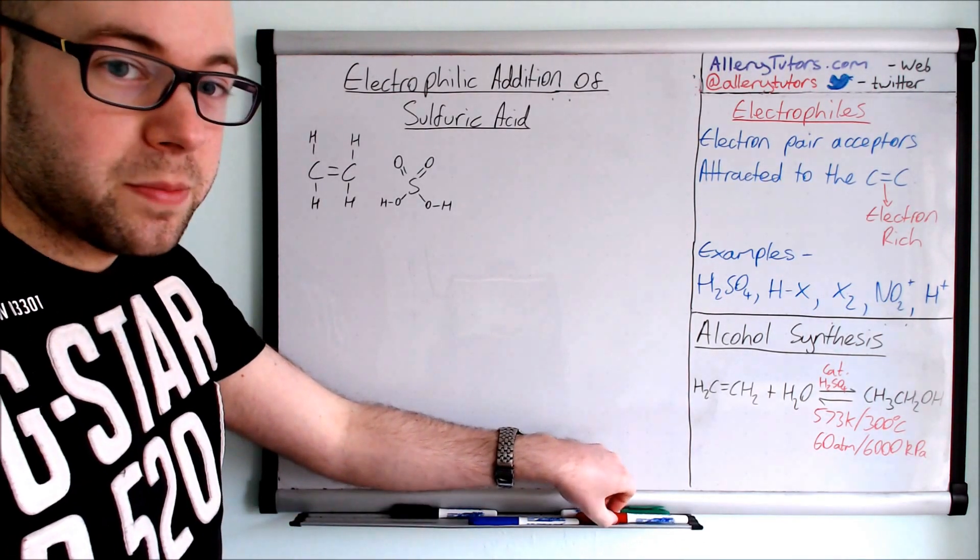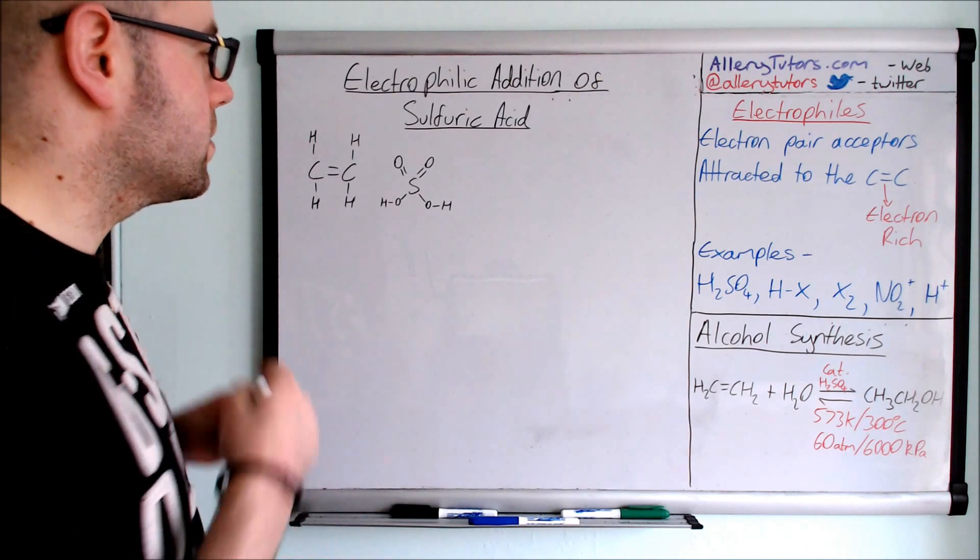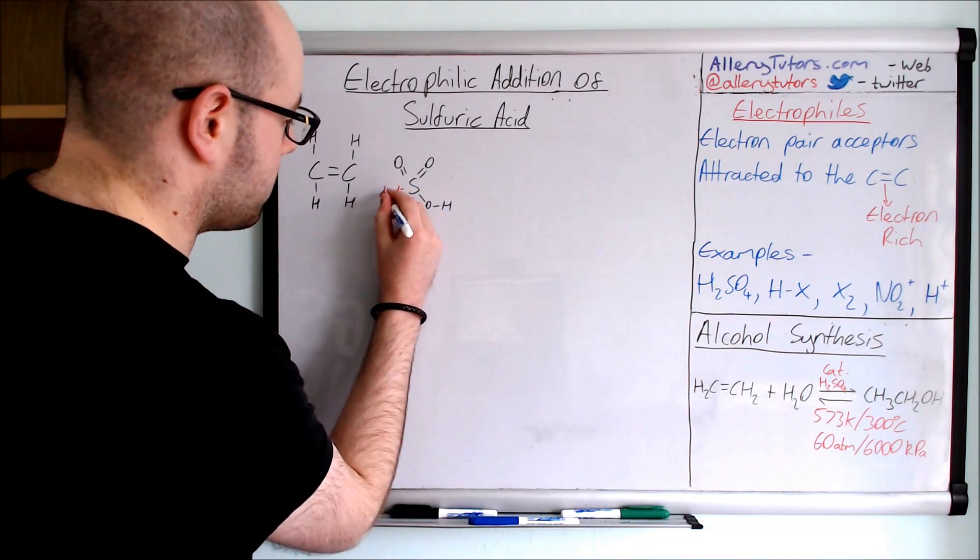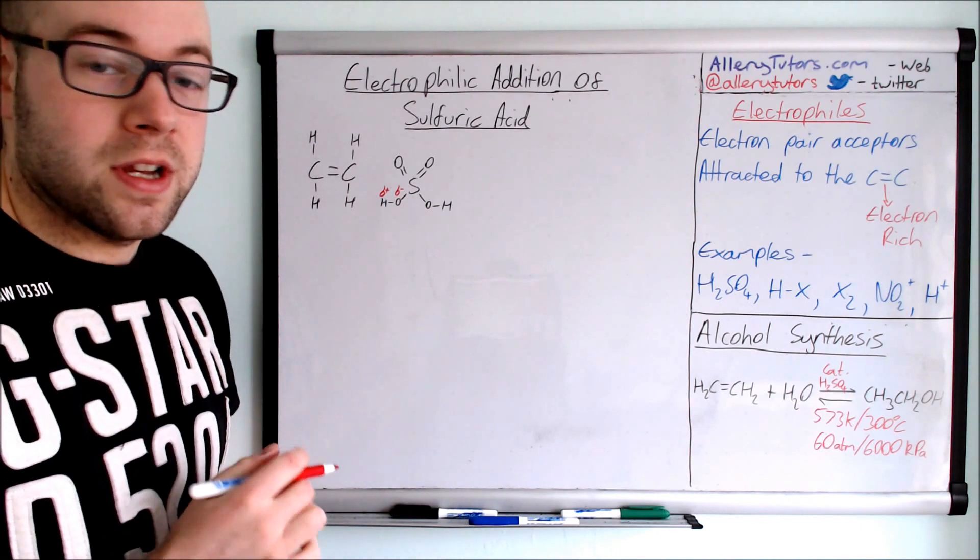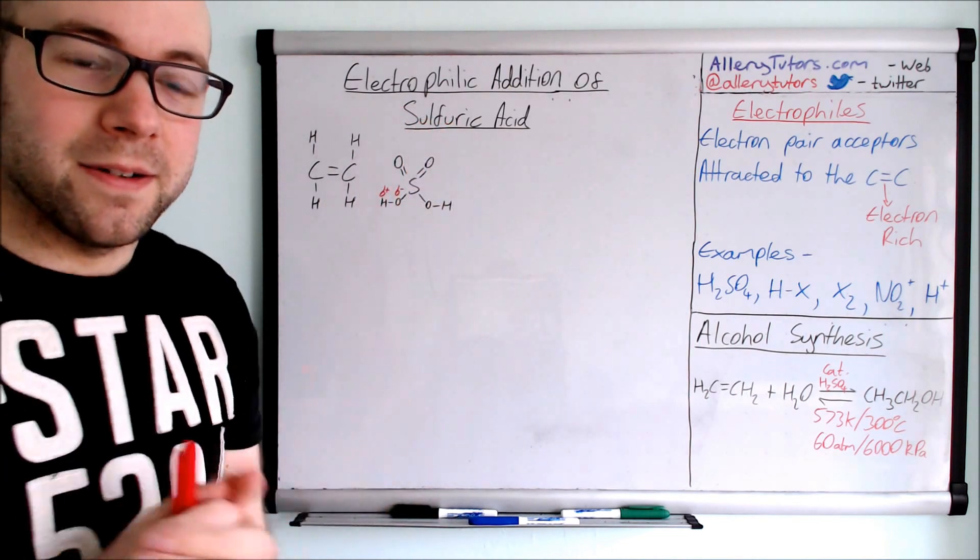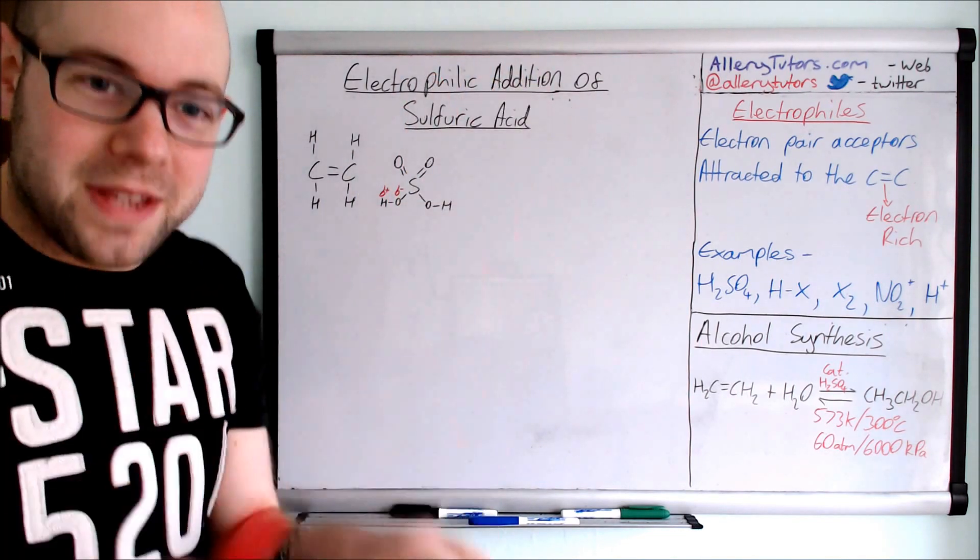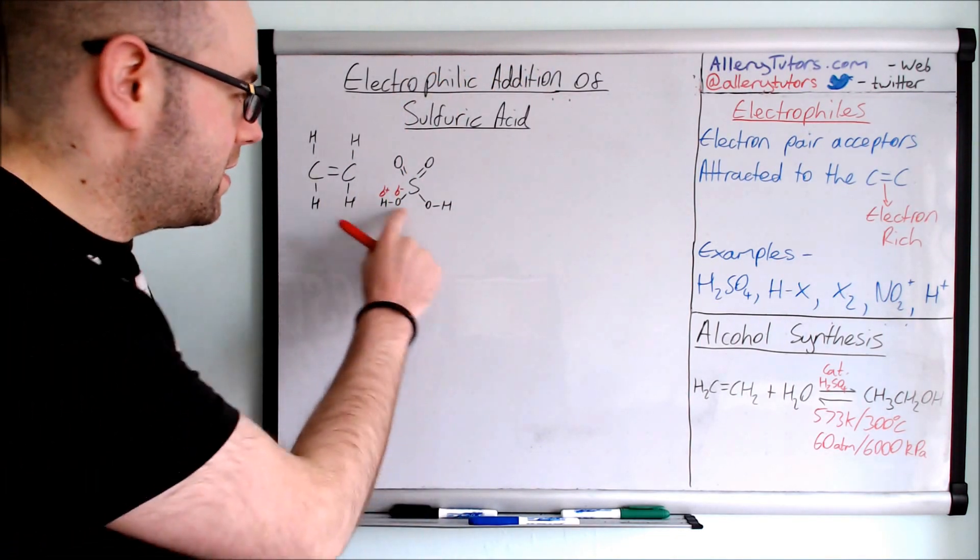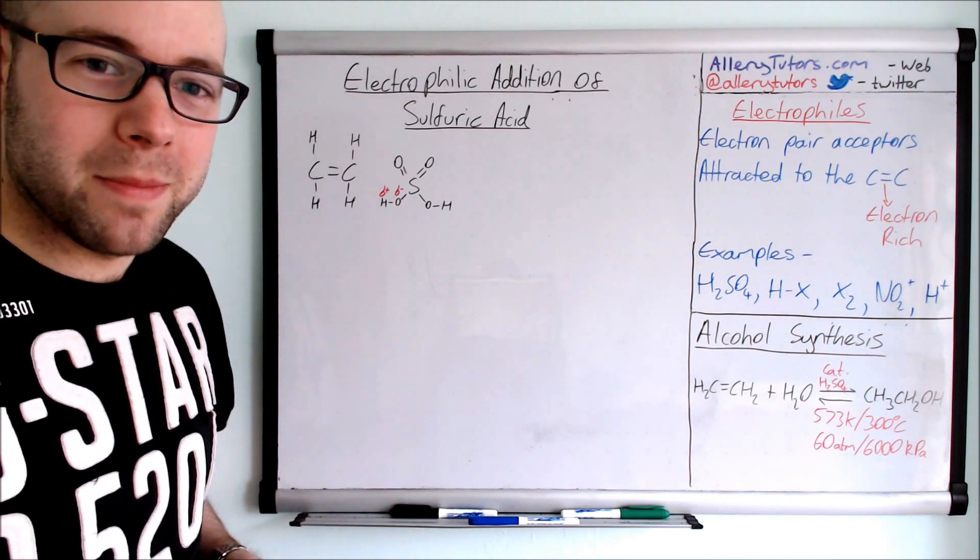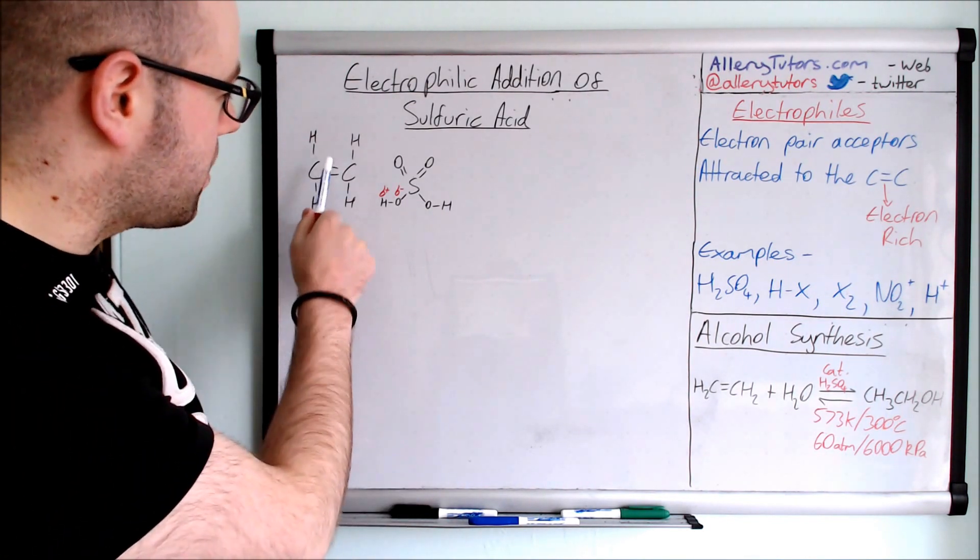So let's put on our delta positives and delta negatives. So our delta negative is sitting on the oxygen there. And we have a delta positive sitting on the hydrogen. Now you need to know the structure of sulfuric acid. It looks like a man or a woman kind of sticking their hands up in the air and the legs are kind of bent kind of like inwards, almost as if they're going to do the splits. So that's kind of like how I kind of remember it. So you can see you've got your alkene here.